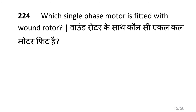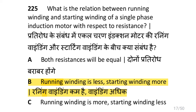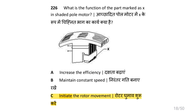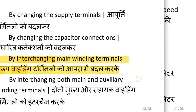Which single phase induction motor is fitted with a wound rotor? That is repulsion motor. What is the relation between running winding and starting winding of a single phase induction motor with respect to resistance? Running winding resistance is less; starting winding resistance is more. What is the function of the part marked X in the shaded pole motor? That is to initiate the rotor movement. How is the direction of rotation of capacitor start, induction run motor reversed? By interchanging the main winding terminals.